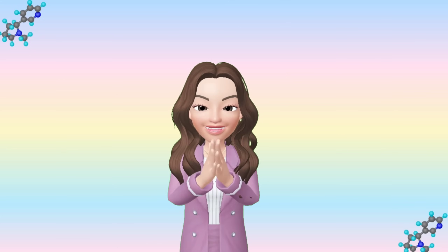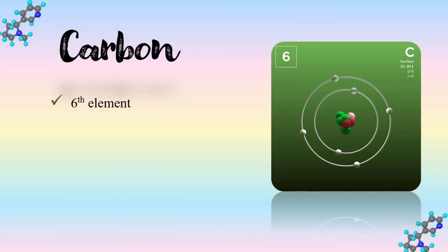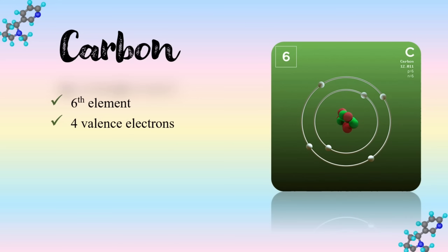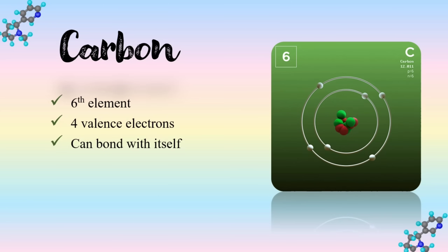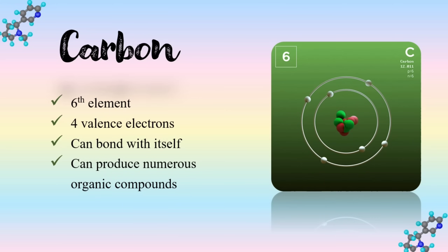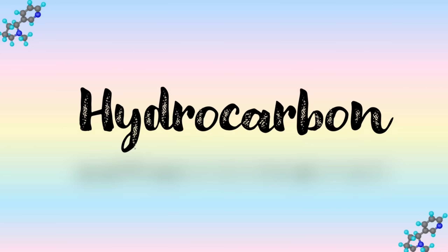For today's lesson we're going to talk about hydrocarbons, but before that let us discuss carbon first. Carbon is the sixth element in the periodic table. It has four valence electrons. Since carbon has four valence electrons, each valence electron participates in bonding and distributes evenly over the atom surface. Carbon can also bond with itself, making it a unique atom. Because of this uniqueness, carbon can produce numerous organic compounds including all kinds of chain and ring molecules.